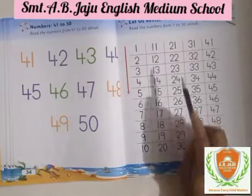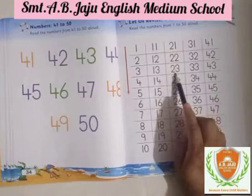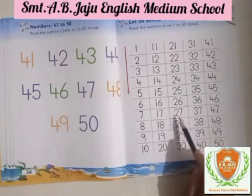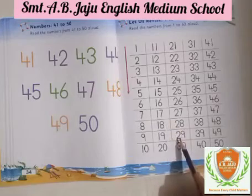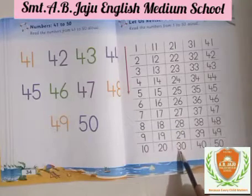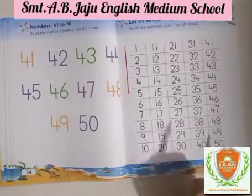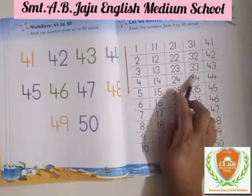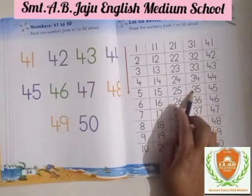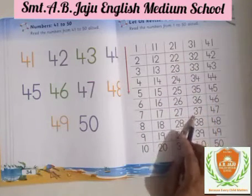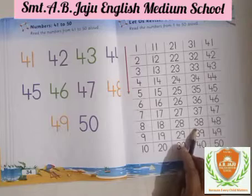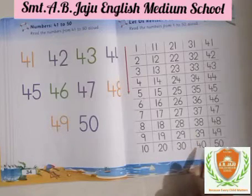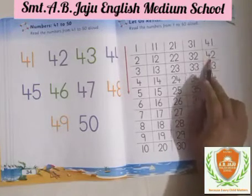21, 22, 23, 24, 25, 26, 27, 28, 29, 30, 31, 32, 33, 34, 35, 36, 37, 38, 39, 40.